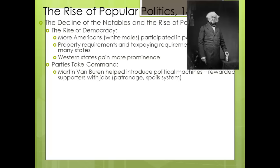Political parties begin to take control during this time, engineered by Martin Van Buren — former governor of New York, secretary of state, vice president, and president of the United States. He helped introduce political machines and took the idea of patronage to an extreme, also referred to as the spoils system. What Van Buren and the Jacksonians did was reward political supporters with jobs — those who helped Andrew Jackson become president were rewarded with political positions.